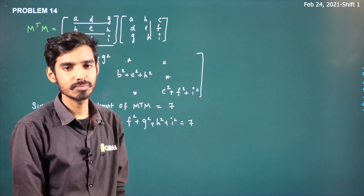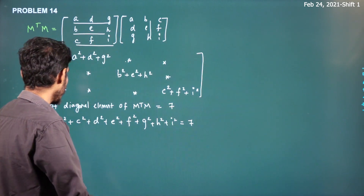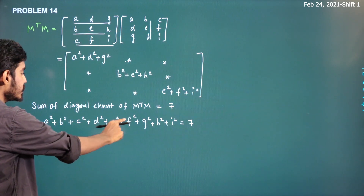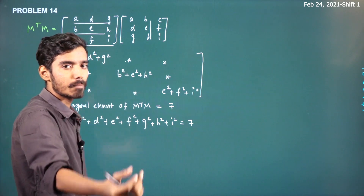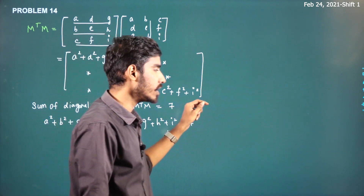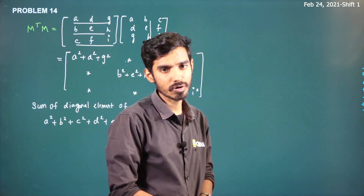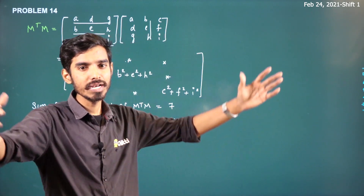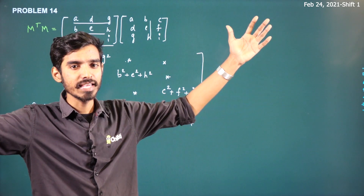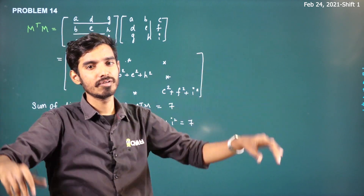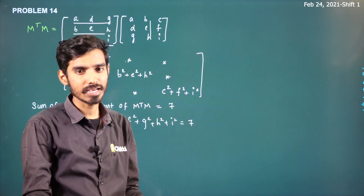So A, B, C, D, E, F, G, H, I can take values from {0, 1, 2}. You can get some outputs. How many ordered 9-tuples (A, B, C, D, E, F, G, H, I) can you form such that the sum of their squares equals 7? That's the question.